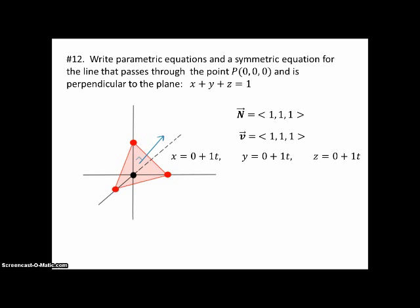And so, we use (0, 0, 0) for X naught, Y naught, Z naught. And we use (1, 1, 1) for the coefficient of T. And so, X, Y, and Z are all just equal to T. And therefore, they're equal to each other. So, those are the parametric equations, and there's the symmetric equation.